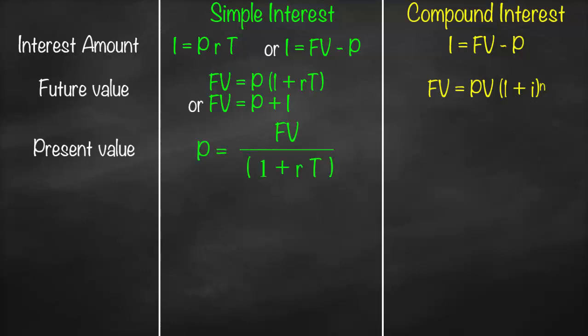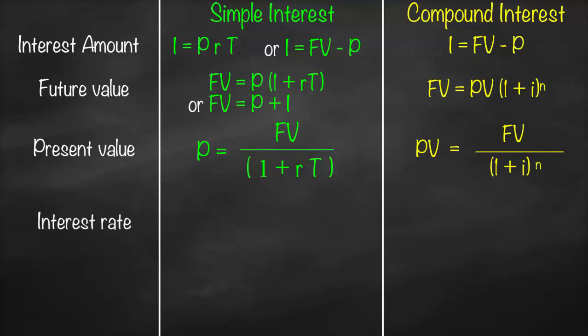For present value, the simple interest present value equals future value divided by (one plus r times t), while for compound interest our present value is future value divided by open bracket (one plus i) close bracket to the power n.